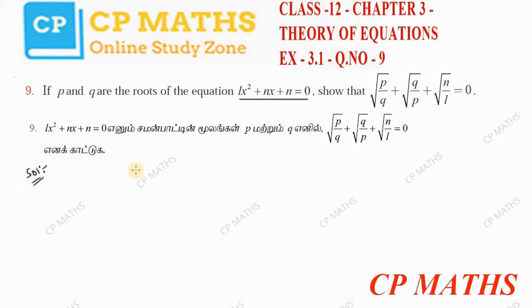First of all, you will write the equation: lx square plus nx plus n equal to 0.